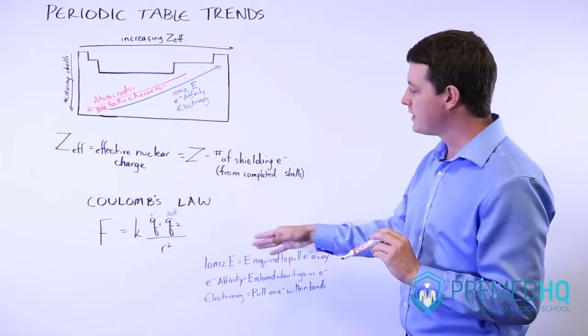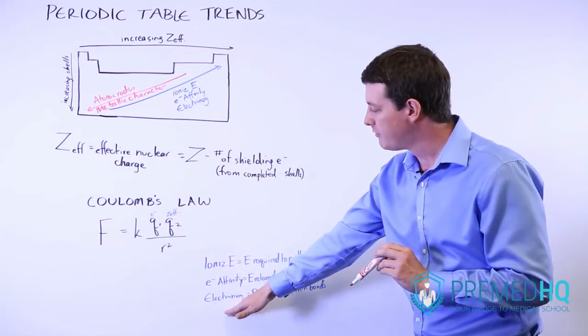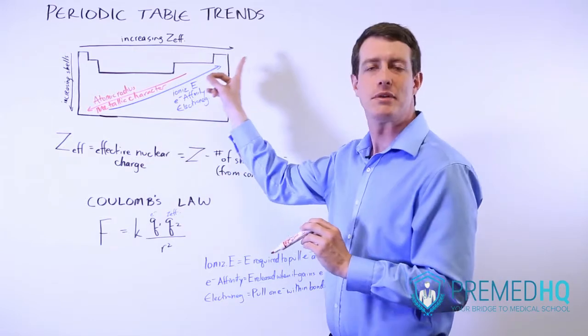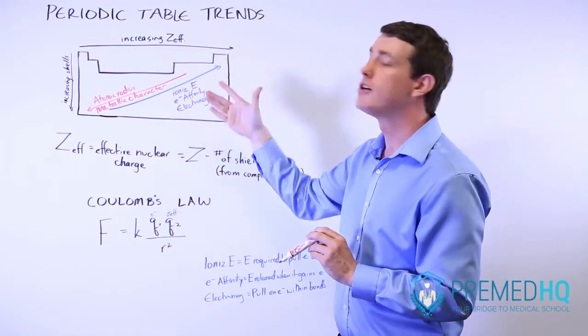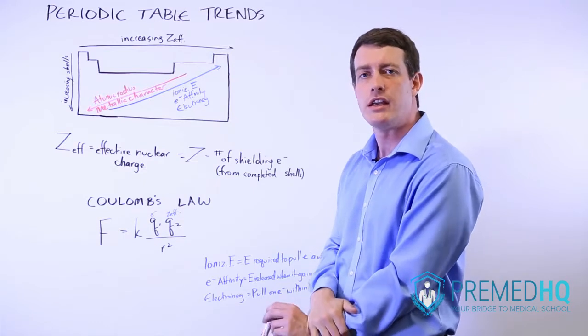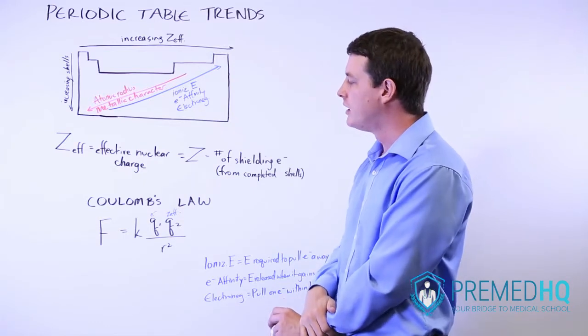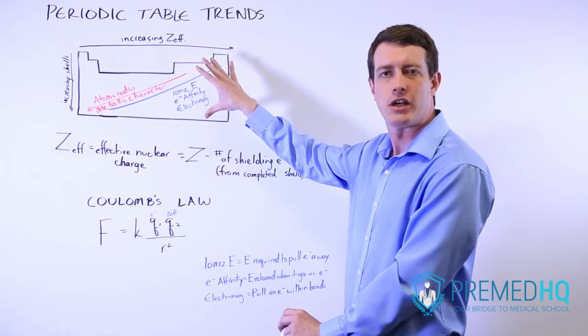And so what you'll see is that because all three of these care about the force, they get greater as you move up and to the right. And that explains why these trends occur in the periodic table. And it's a very interesting point at the intersection between physics and general chemistry.